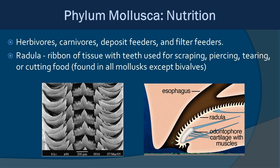In terms of nutrition, molluscs are all over the map — herbivores, carnivores, deposit feeders, filter feeders. One of the most unique features, found in the majority of mollusc classes except bivalves, is the radula: a ribbon of tissue with teeth used to scrape algae off rocks, pierce into prey, tear or cut flesh, and even drill into other mollusc shells. The radula is quite an adaptable feature across several of these classes.